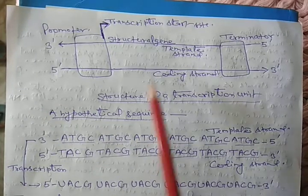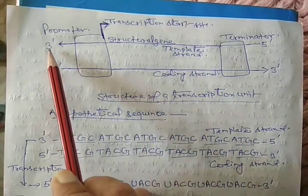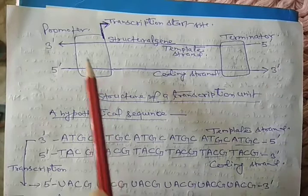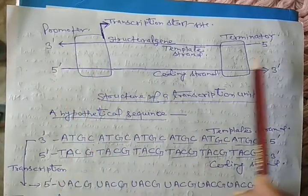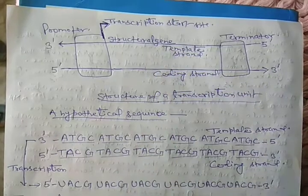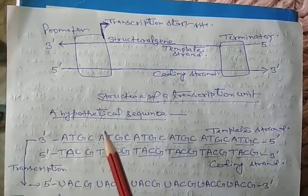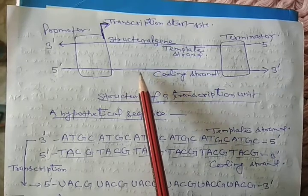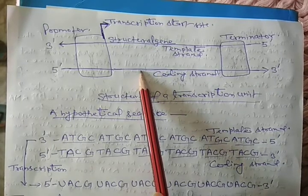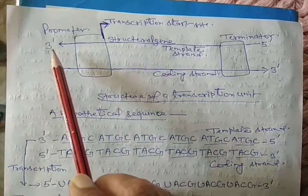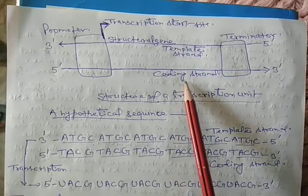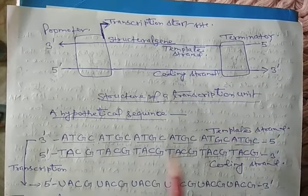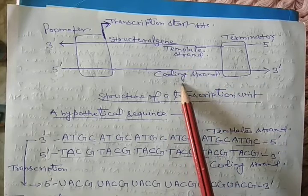There are two strands in DNA. One has polarity 3' to 5' and the other has polarity 5' to 3'. The strand with polarity 3' to 5' acts as the template for synthesis of the RNA strand, while the strand with polarity 5' to 3' is displaced during transcription. Conventionally, the 3' to 5' strand is called the template strand, and the 5' to 3' strand is called the coding strand.